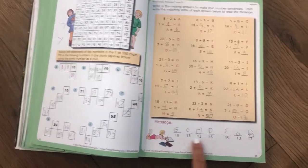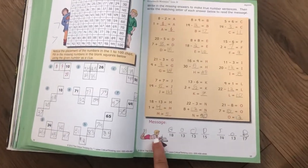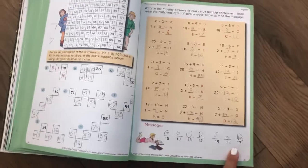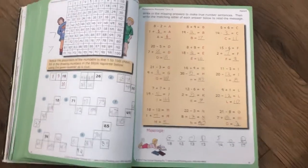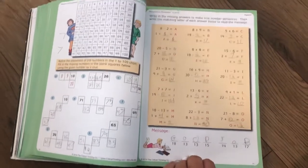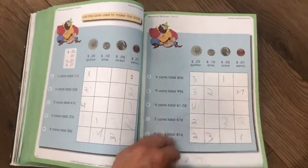The nice thing too is there's self-correcting pages where they plug in answers as they're working. If you read the message and it doesn't make a word, you know you got one wrong. That's a really good tool for them to kind of self-correct and go back and know that they need to rework a problem.